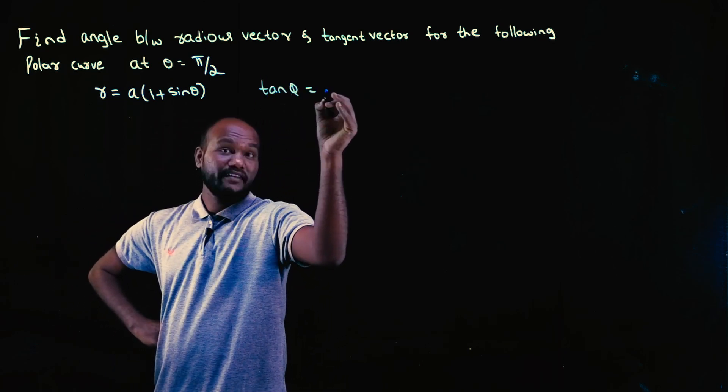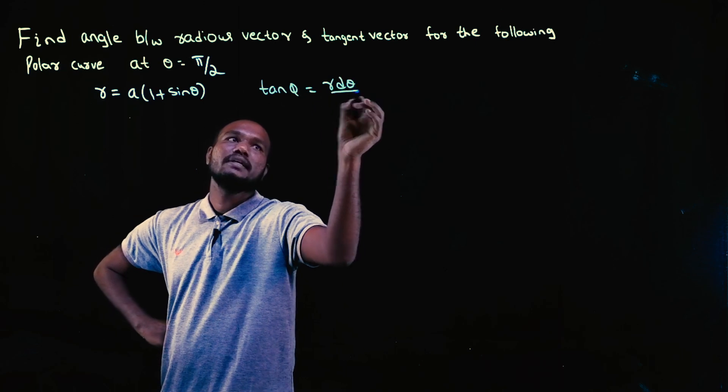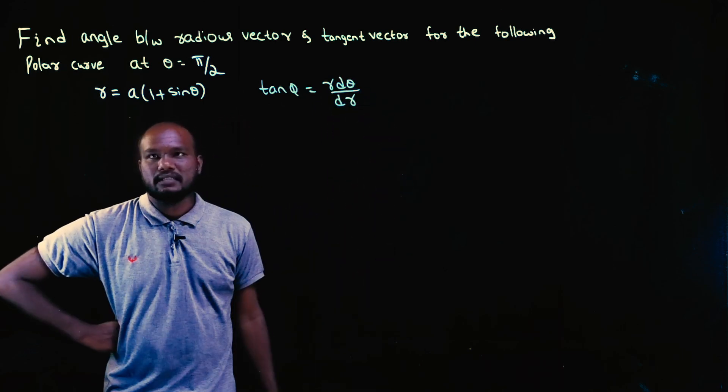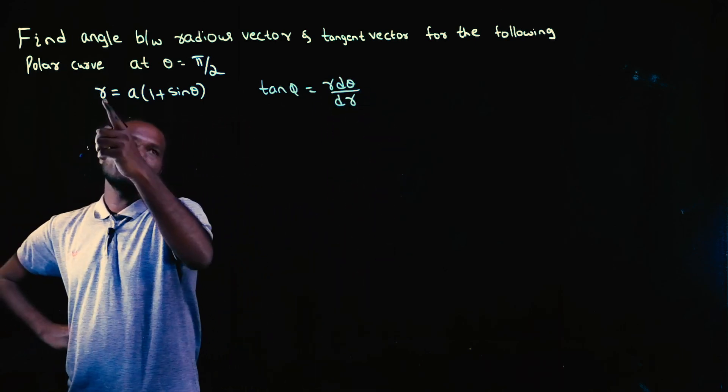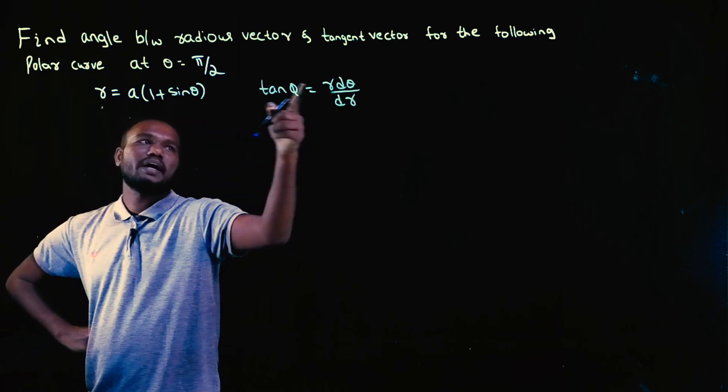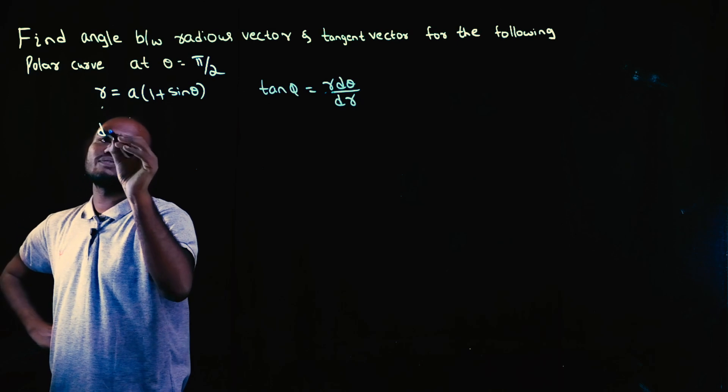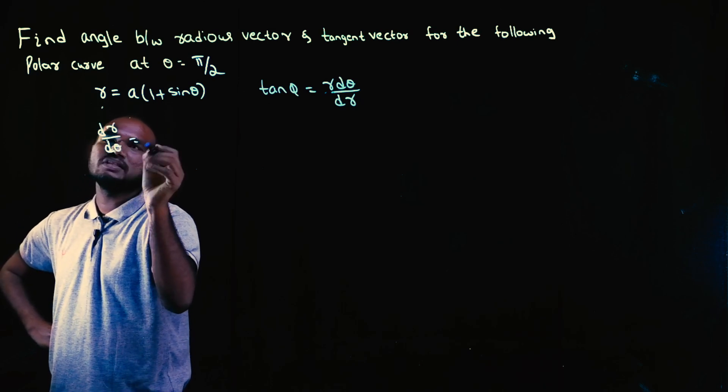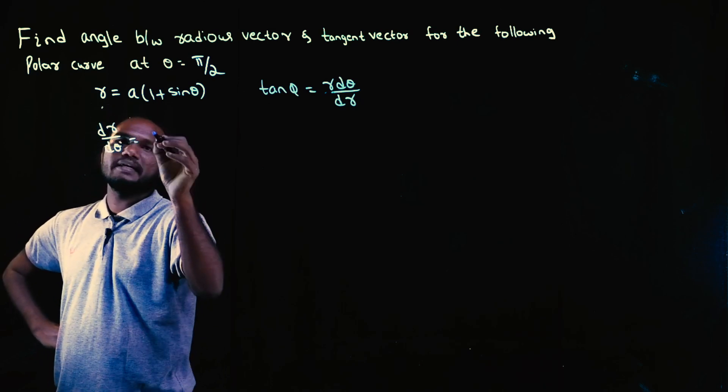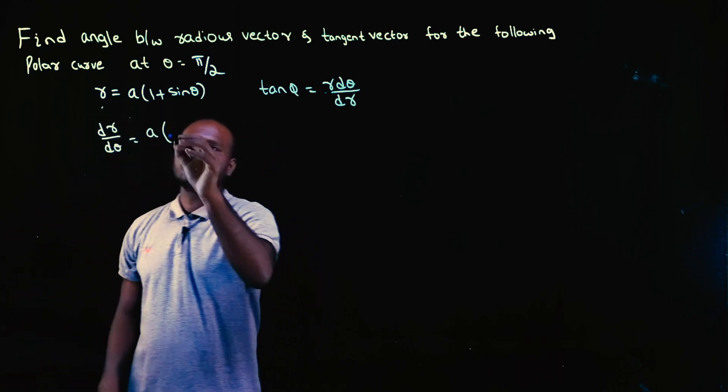That is φ. We have to find tan φ, that is R into dθ by dr. To find this, R directly is there so you don't have to take log. So dθ by dr is what we have to find. To find that, let's find dr by dθ. That is differentiation of R. Differentiation dr by dθ: a is a number, one differentiation is zero.